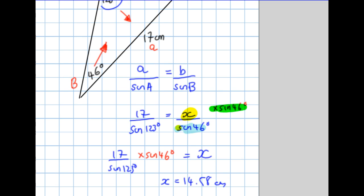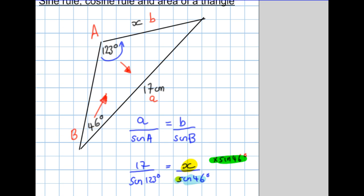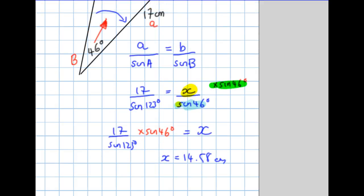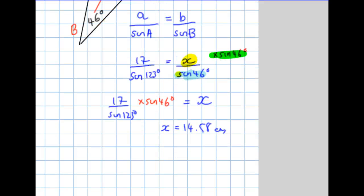Let's just double check. Here's another thing I don't know if you're aware of. The lengths of the sides are in proportion to the size of the angles opposite. So we've got 14.58. It had to be less than 17, because 46 degrees is less than 123. Now, just before I move on to the cosine rule, be aware,